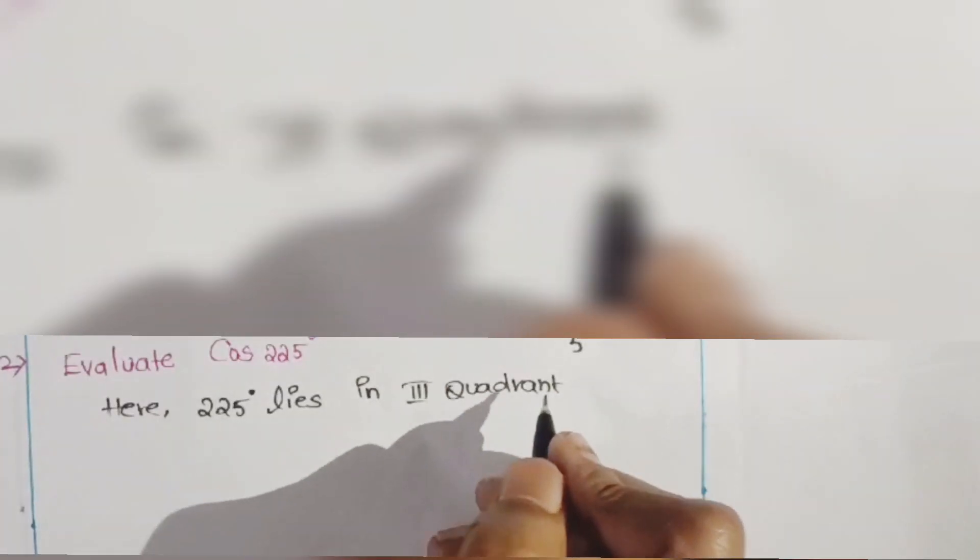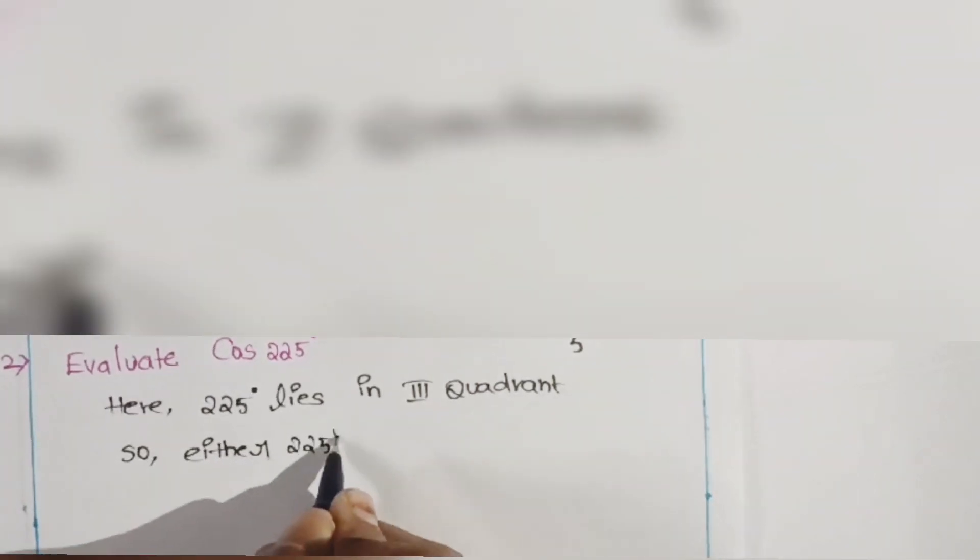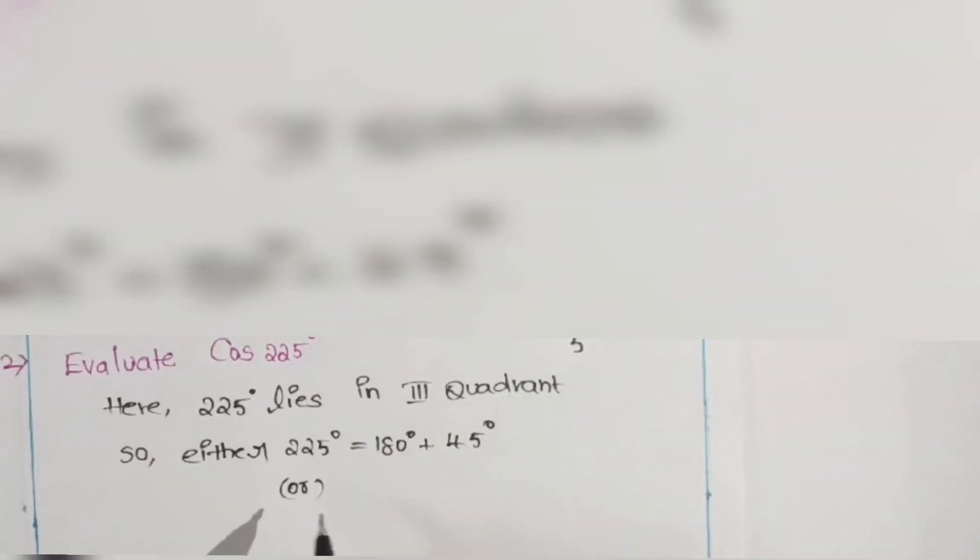So we can write 225 in two ways: either we can write 225 as 180° plus 45°, or 270° minus 45°.